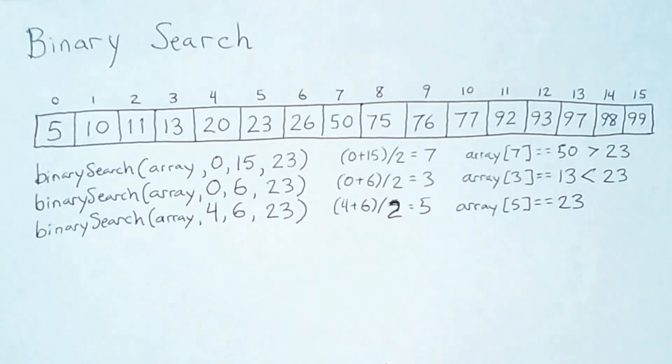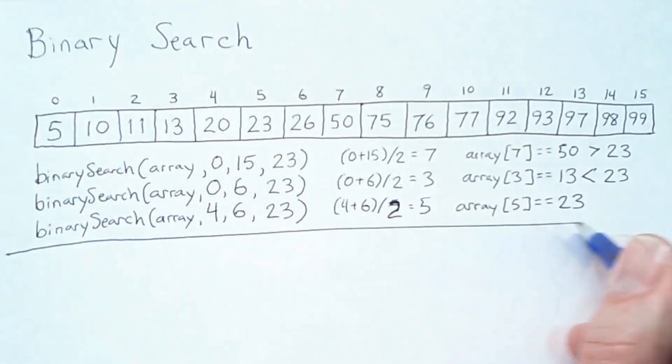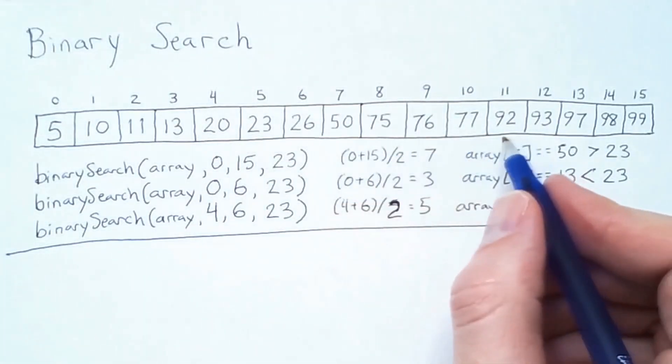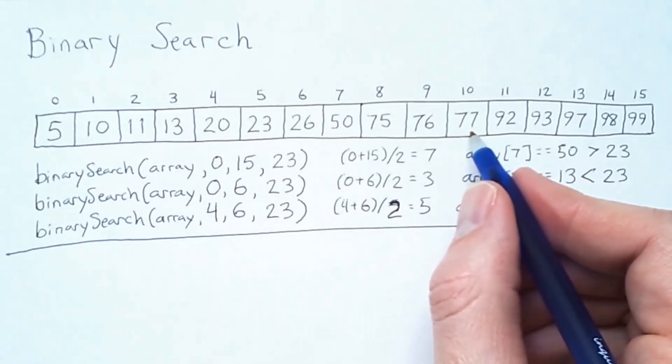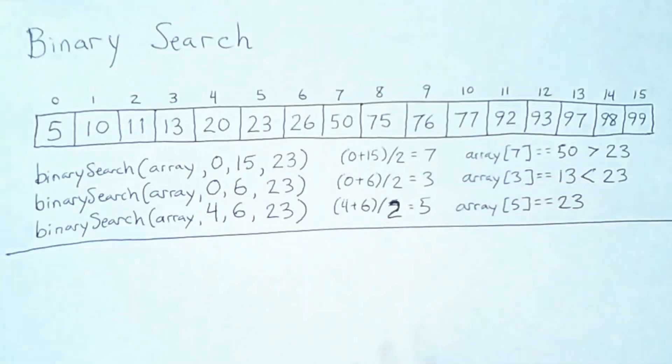What does this process look like if we do not find the value we're looking for? Let's say we were looking for a value of 90. Now, 90 is not in this array. We can see that because this is a sorted array, and we have the value 77 and then 92. 90, if it were here, would be between those values, but it is absent. What sequence of recursive calls are we going to go through to find that 90 is not present?